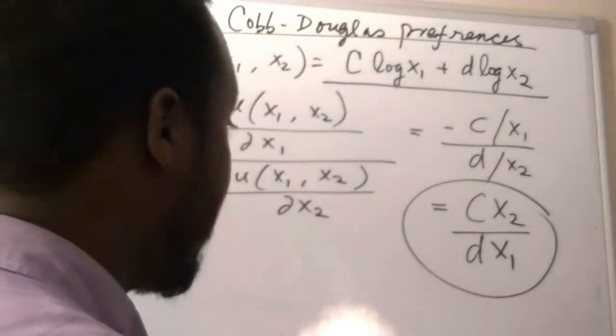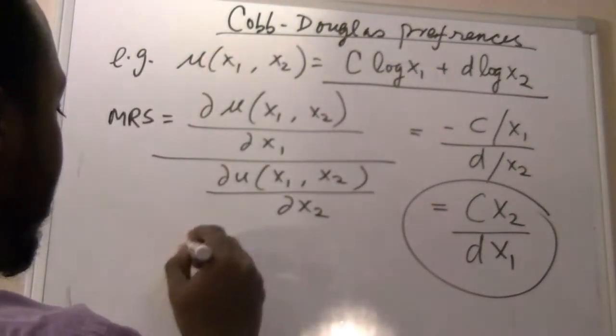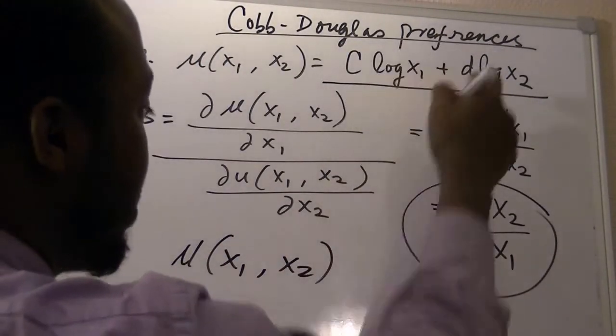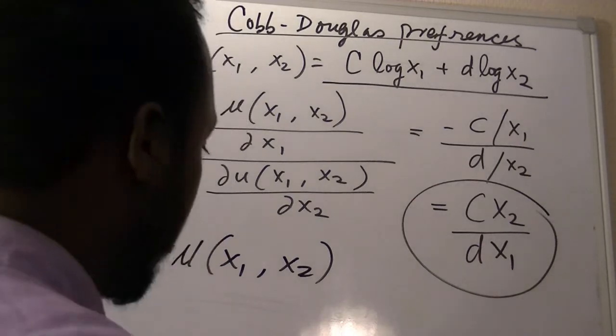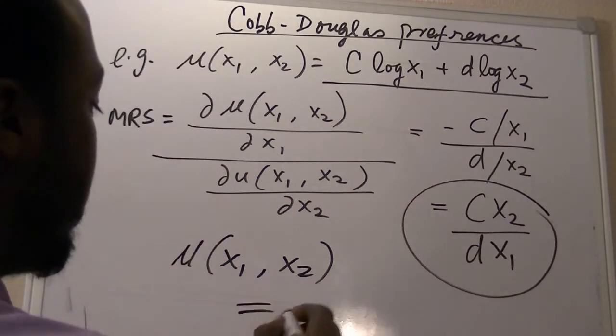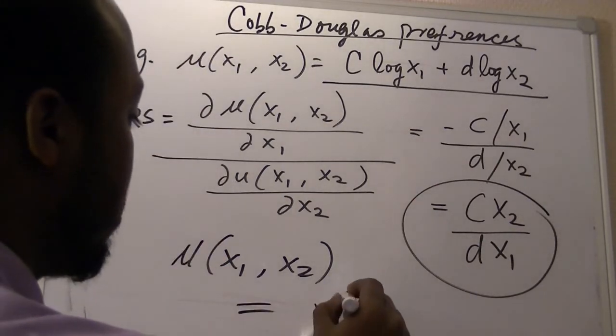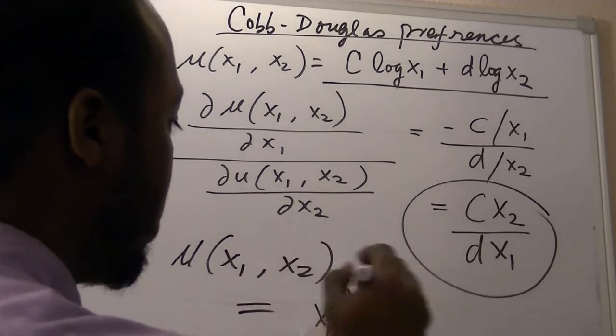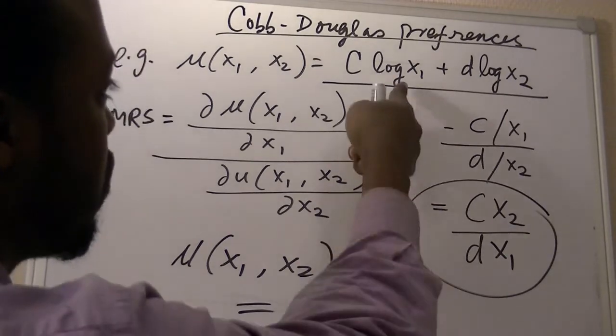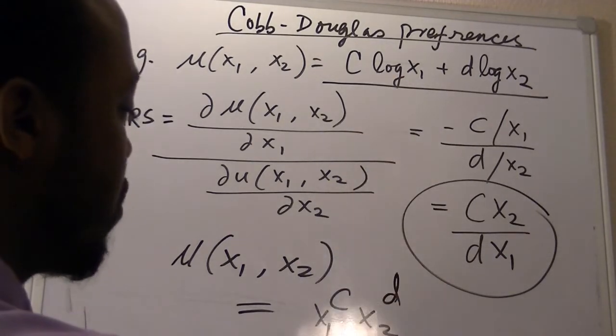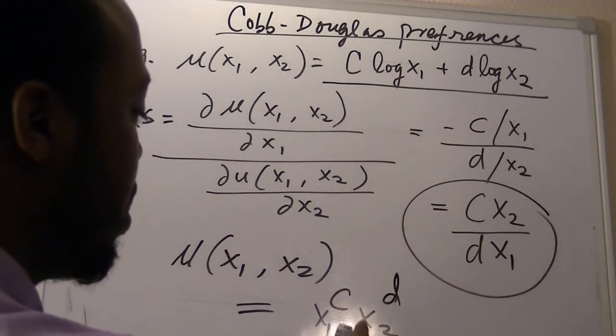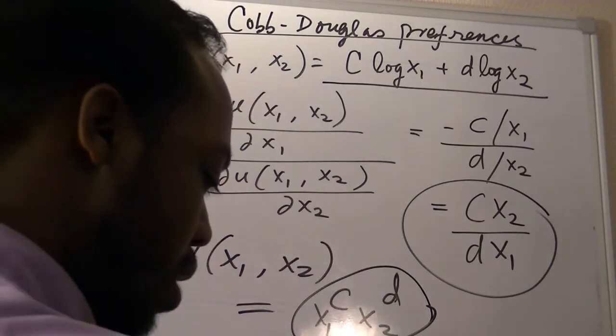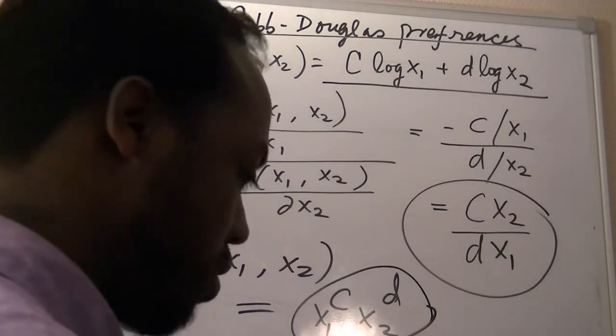Let's take another representation to prove this. What if u of x1, x2, instead of logarithm, what if this was equal to x1 to the power of c, x2 to the power of d? Now, instead of logarithm, we have x1 to the power of c, x2 to the power of d. This is exponential representation of the same utility.